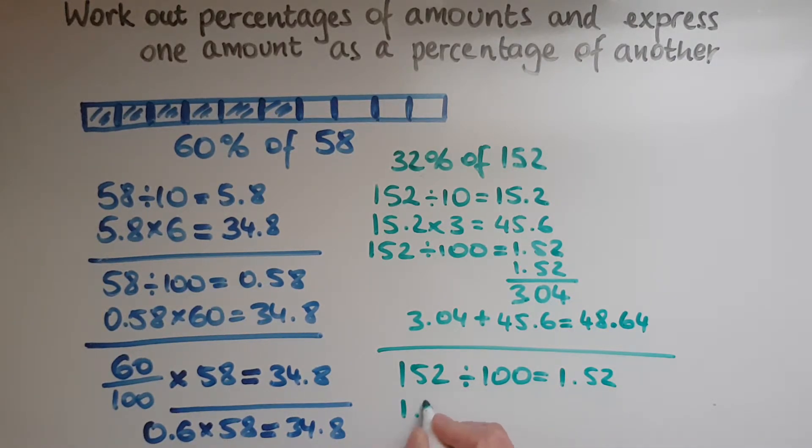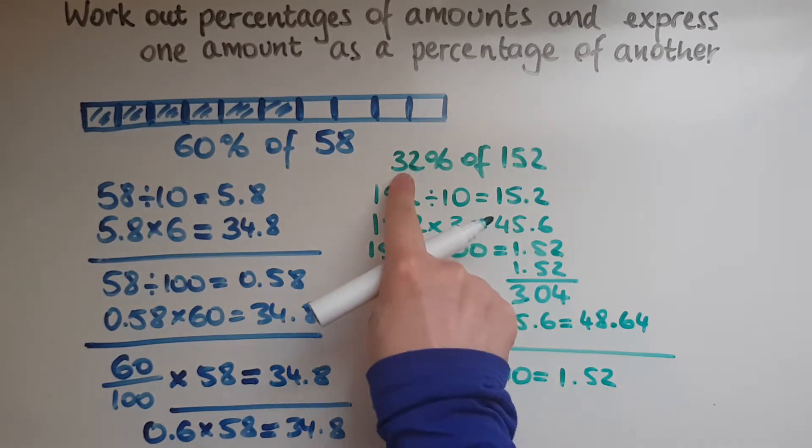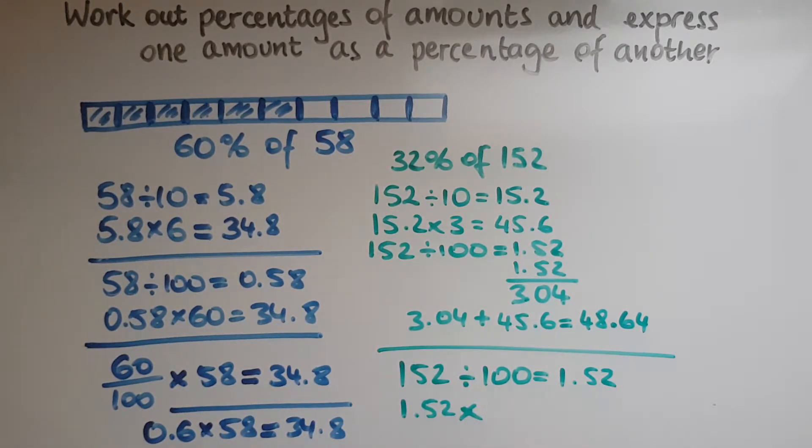And then get that 1.52 and multiply it by 32, because I want 32%. So 1.52 times 32 should give us the same answers as what we had before. So it is 48.64.